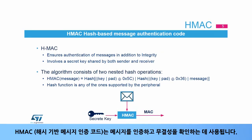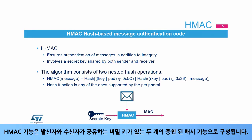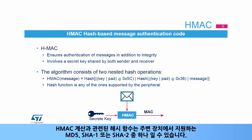The hash based message authentication code or HMAC is used to authenticate messages and verify their integrity. The HMAC function consists of two nested hash functions with a secret key shared by the sender and the receiver. The hash function involved in the HMAC computation can be any one supported by the peripheral: MD5, SHA-1 or SHA-2.